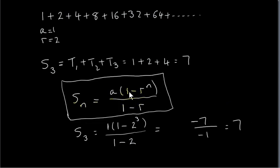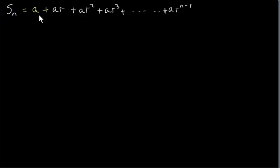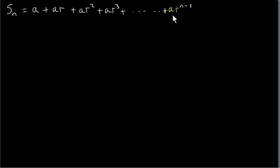Now I'll give a proof of this formula. If you don't want to see the proof you can skip the next section. Sn is the sum of the first n terms: t1, t2, t3, t4, all the way up to tn. What we do is multiply this series by r and add it on to this series, so we get r times Sn.